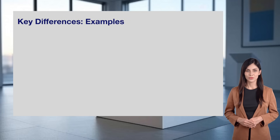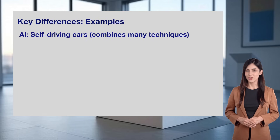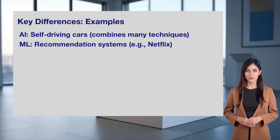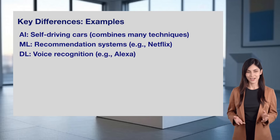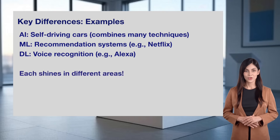Let's look at examples to see the differences in action. AI includes complex systems like self-driving cars, which combine many techniques to work. Machine learning powers recommendation systems, like Netflix, suggesting shows based on your viewing habits. Deep learning excels in tasks like voice recognition — think of Alexa understanding your commands. Each approach shines in different areas, showing how they complement each other within the AI family.